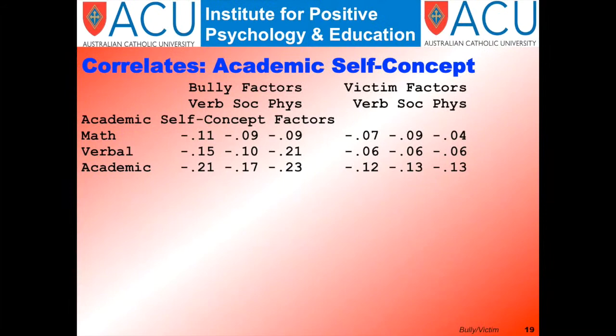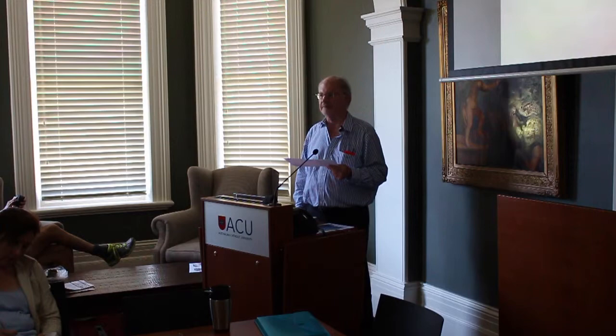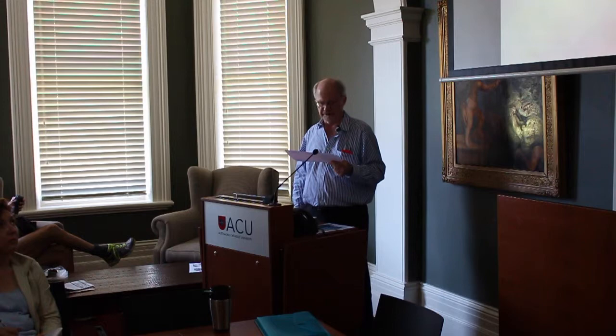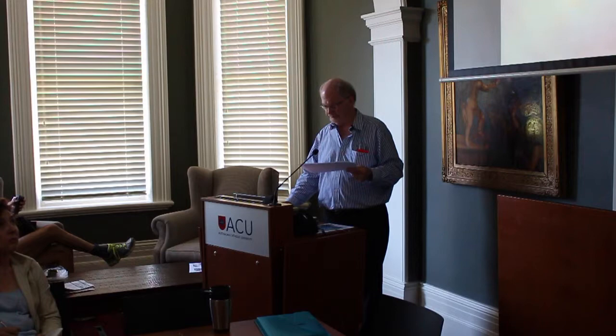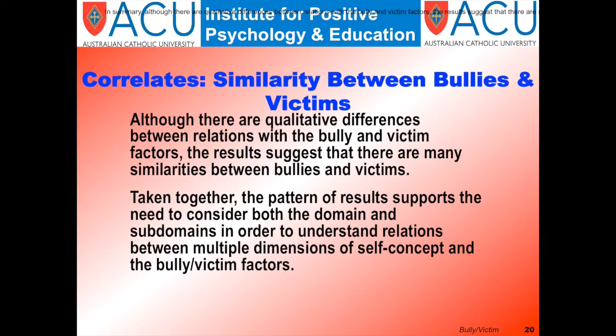Looking at academic components, both bullies and victims tended to have depressed academic self-concepts. The effects are larger for the general academic factor than specific math and verbal factors, probably reflecting a more general adjustment factor. Bullies tend to have more negative scores than victims. Although there were qualitative differences between the two, the results suggest that there are many similarities between bullies and victims.